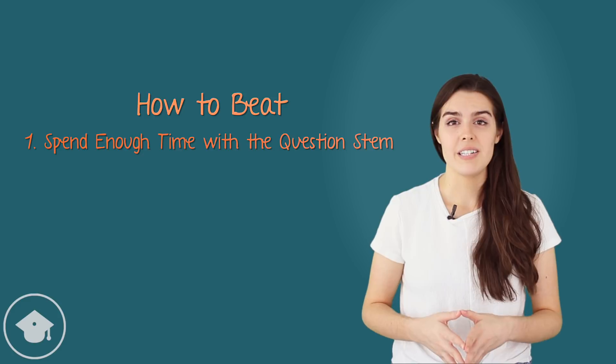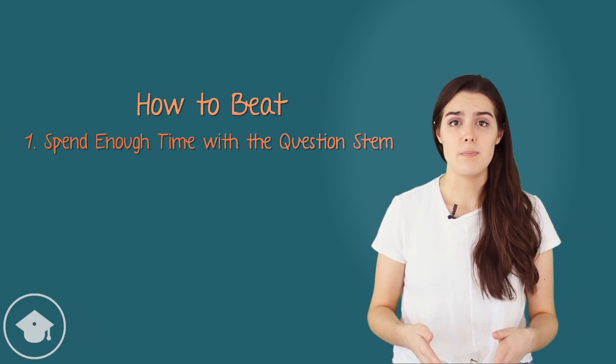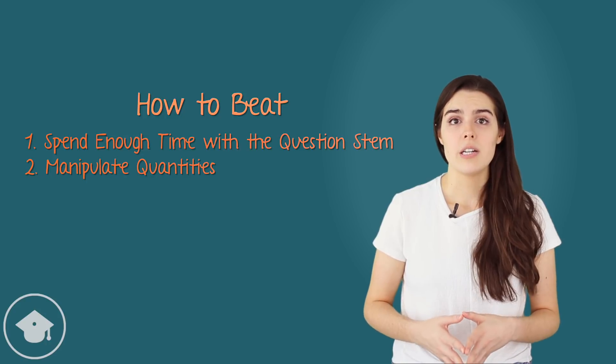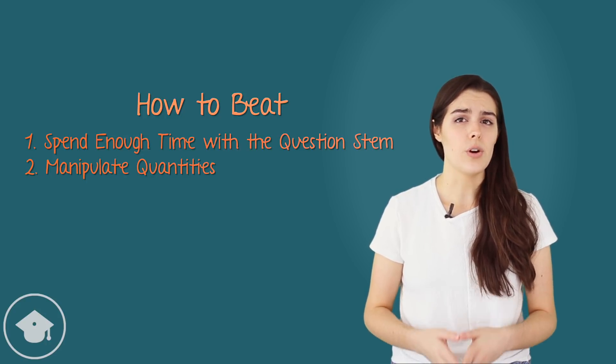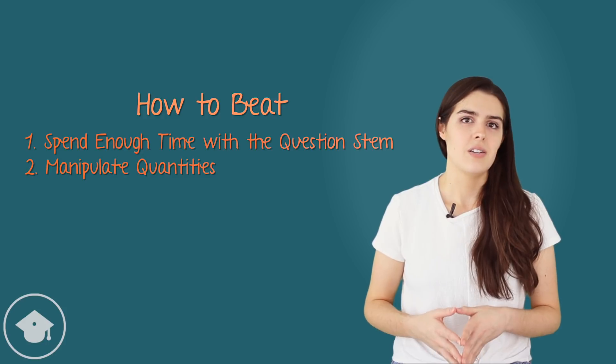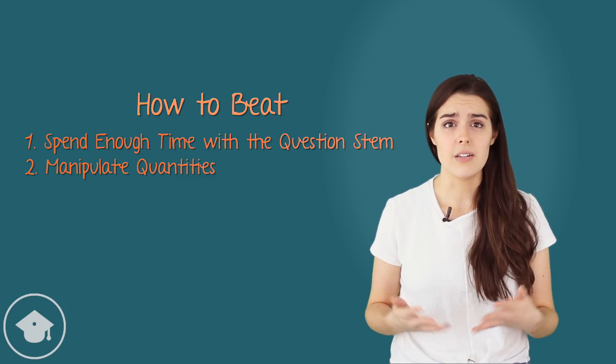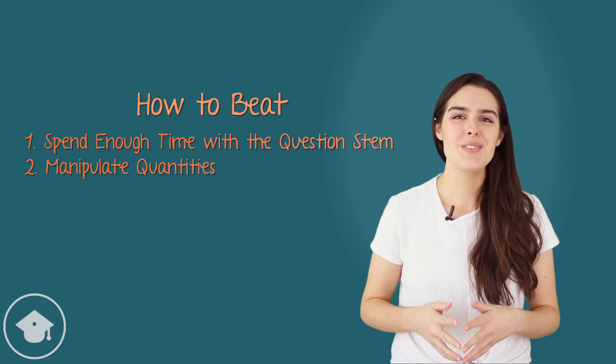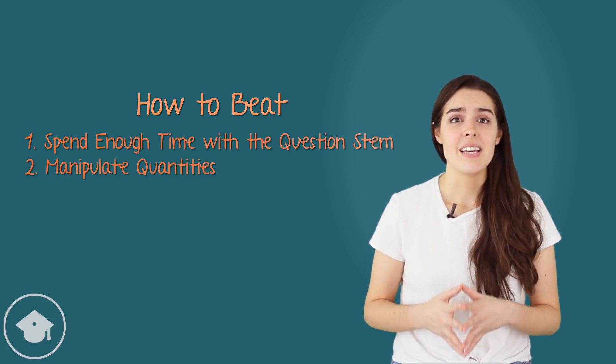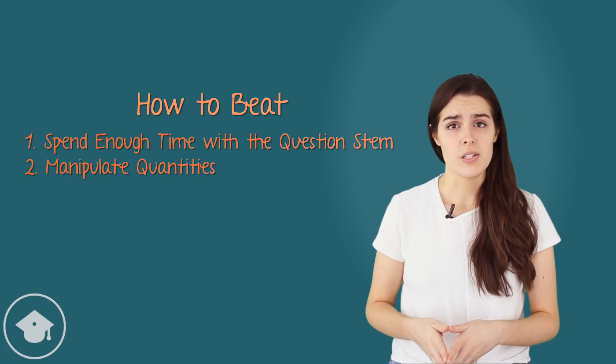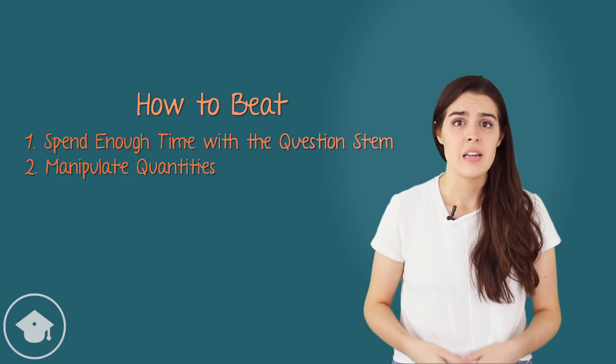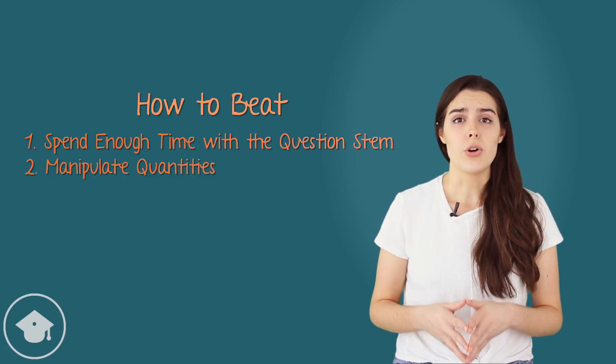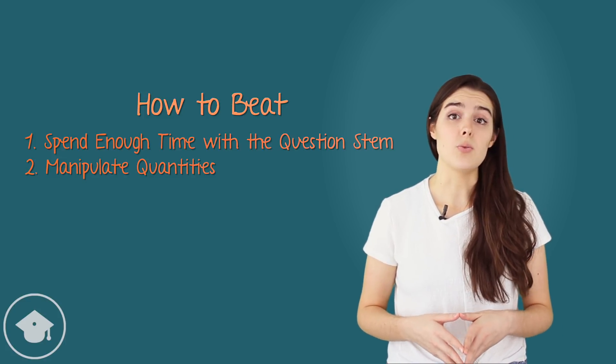The second step in beating quantitative comparison questions is to manipulate the quantities themselves. Like the question stem, the quantities are rarely given in an easy-to-work-with format. Often, students forget that they can use math to simplify the quantities and resign themselves to blind guessing. Don't be that guy! Use algebraic concepts to take the quantities to their simplest forms, utilizing the information from the question stem. This will either lead you directly to the answer, or allow you to more easily determine what kinds of numbers you want to test.